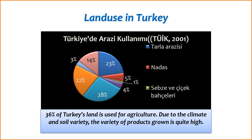3. Irrigation systems — Efficient water use: given Turkey's diverse climate, including arid and semi-arid regions, irrigation systems are crucial for maintaining agricultural productivity. Various irrigation methods, such as drip irrigation and sprinkler systems, are employed to efficiently use water resources.